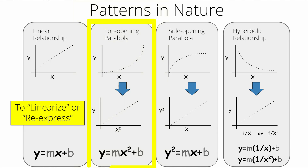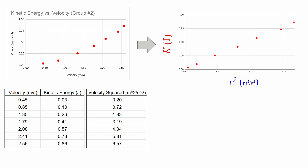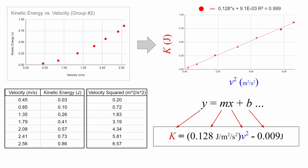To linearize a top-opening parabolic graph, the variable graphed on the x-axis needs to be squared. When students graph the kinetic energy versus velocity squared, their graph will appear linear with a y-intercept close to zero. If necessary, remind students how they can write an equation from their linear graph showing the algebraic relationship between the kinetic energy and the square of the velocity.